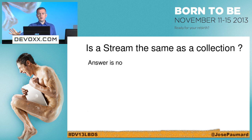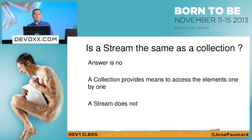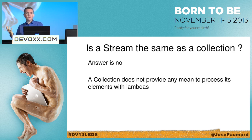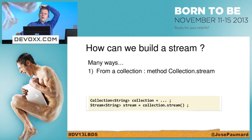Is a stream the same as a collection? The answer is no. A collection provides a means to accept elements one by one, which is not the case for a stream. The collection does not provide any means to process its elements with lambdas — the map, filter, and reduce methods we showed before the pause are not being added to the collection interface; they are being added to the stream interface.